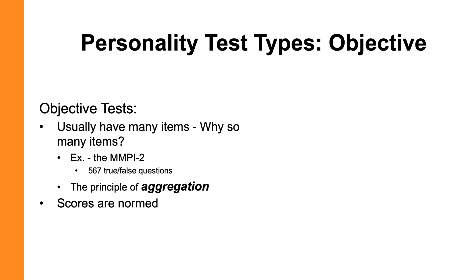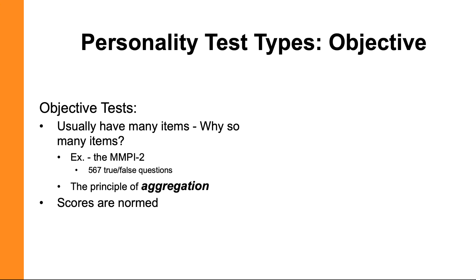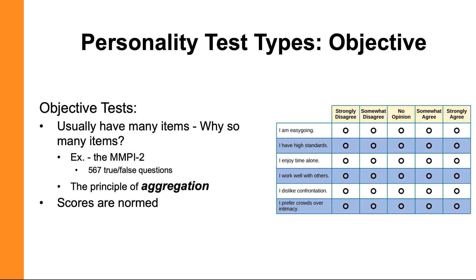Another benefit of objective personality tests is that most are normed. When you get a score for an individual, you can determine how that person's score compares to other people who are demographically similar, and whether their score is higher, lower, or about the same as the average. Here's an example of part of an objective test with a Likert-type format — for a question like 'I work well with others,' you can choose any answer from strongly disagree to strongly agree. That Likert-type format indicates your level of agreement or general opinion of yourself for that question.